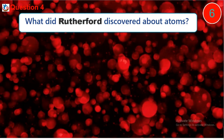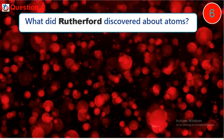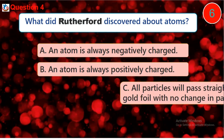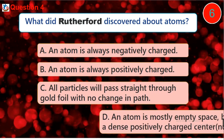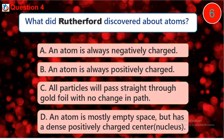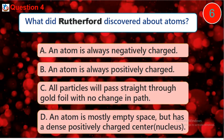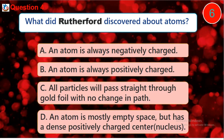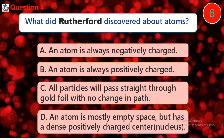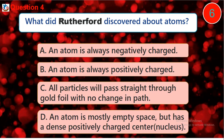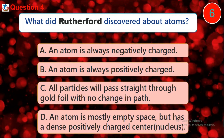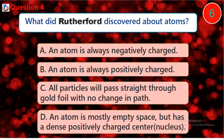Question 4. What did Rutherford discover about atoms? A. An atom is always negatively charged. B. An atom is always positively charged. C. All particles will pass straight through gold foil with no change in path. D. An atom is mostly empty space but has a dense positively charged center called the nucleus.